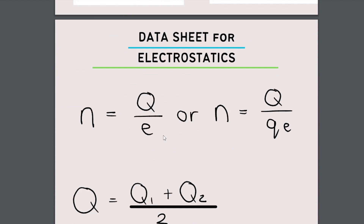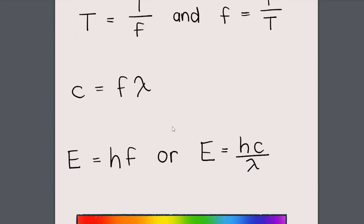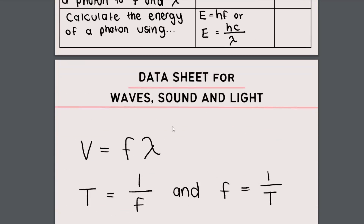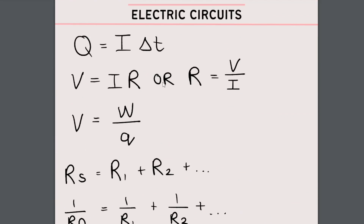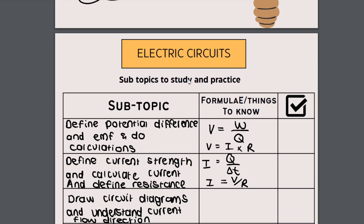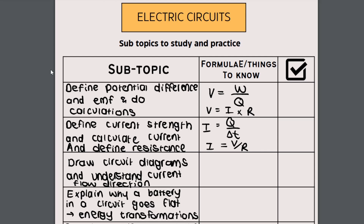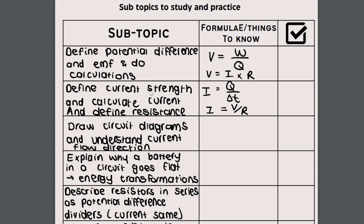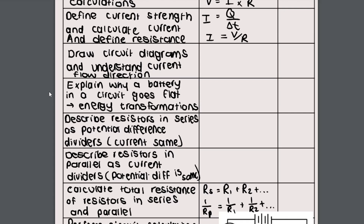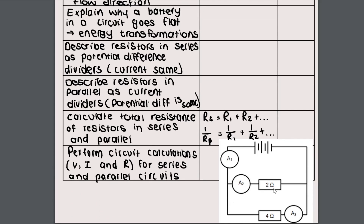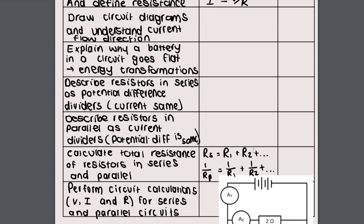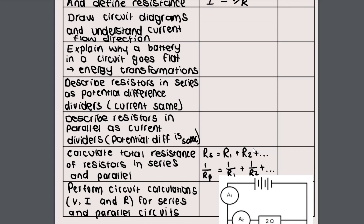Our last big topic is electric circuits, or electricity. You would have started this in grade nine natural sciences, maybe even a little technology. There are lots of definitions you have to know — you need to define potential difference or voltage, current, and resistance. You need to know how to draw circuits, explain why a battery goes flat, and understand the difference between resistors connected in parallel and resistors connected in series. You also need to know how to calculate resistance for resistors in series and parallel.